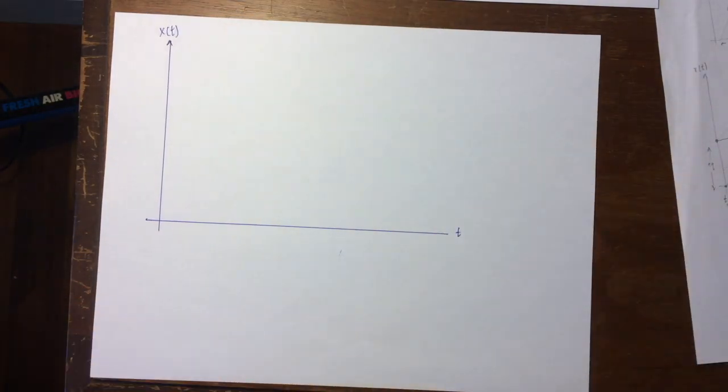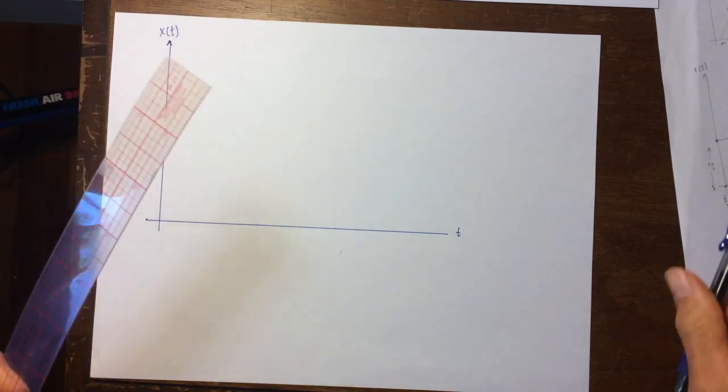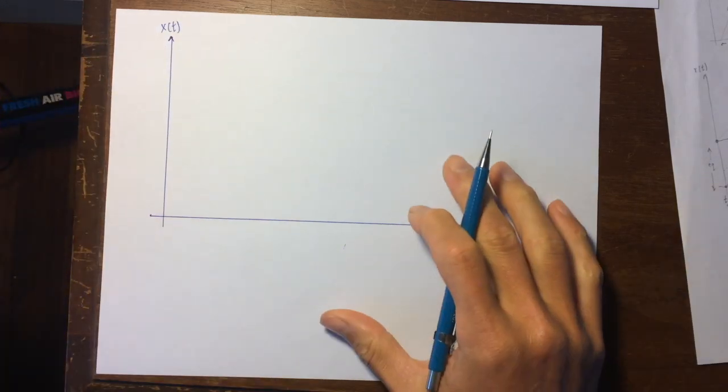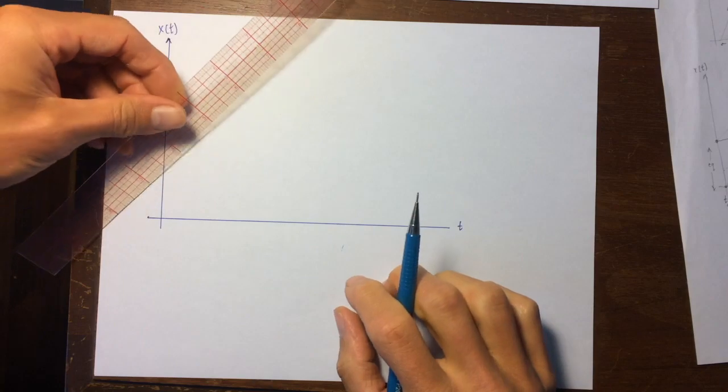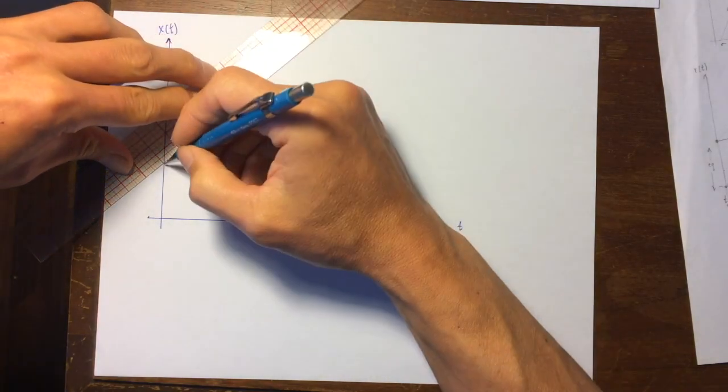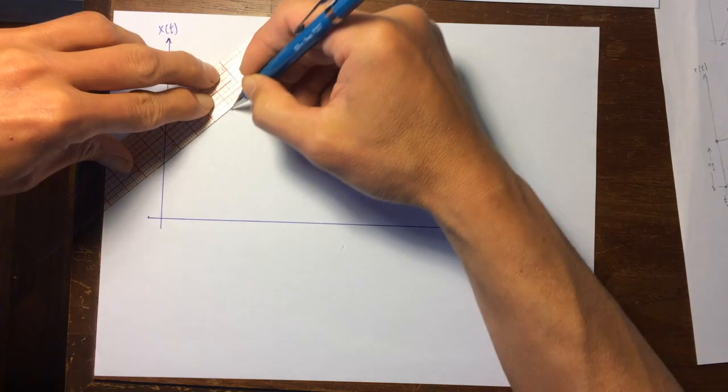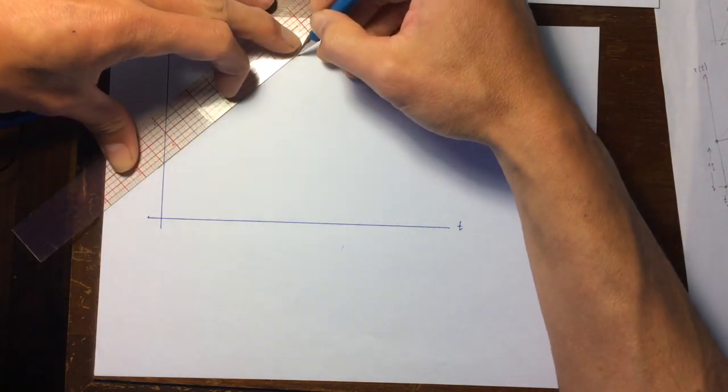Once again it's the position as a function of time of the two objects. What I'm going to do is draw the trajectory of the two objects in pencil.